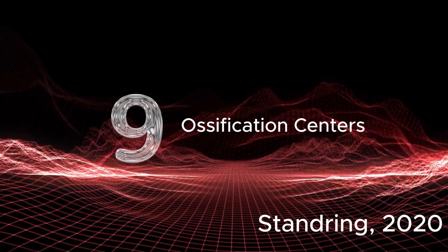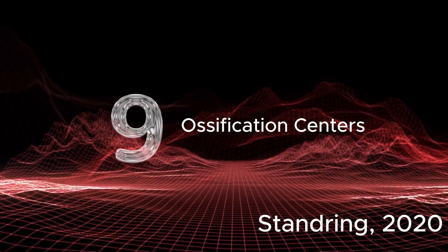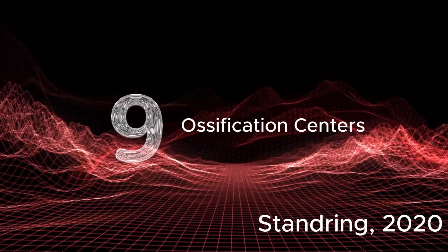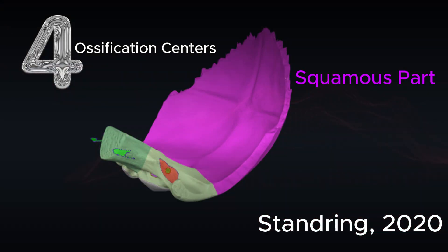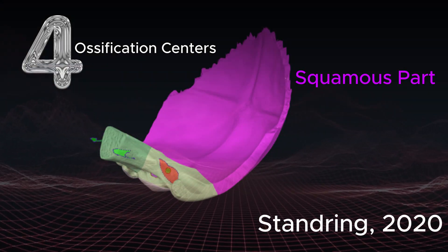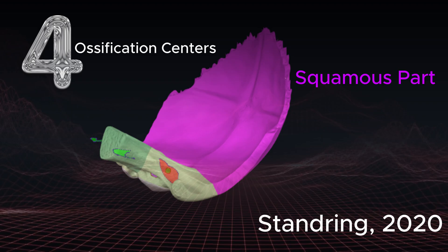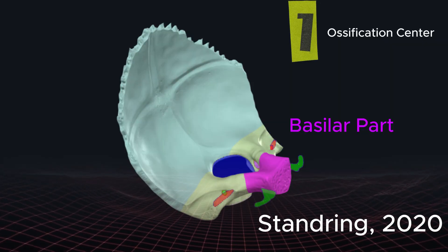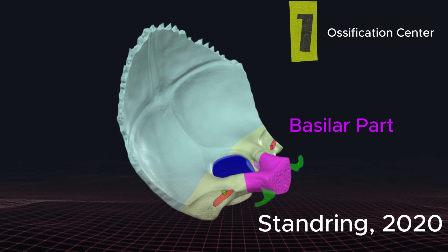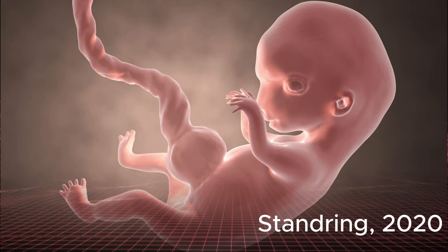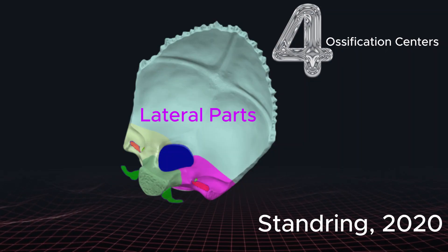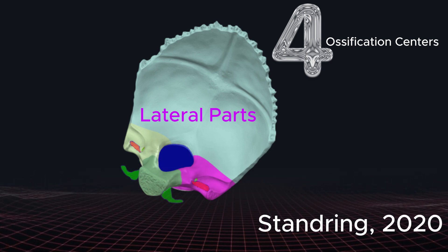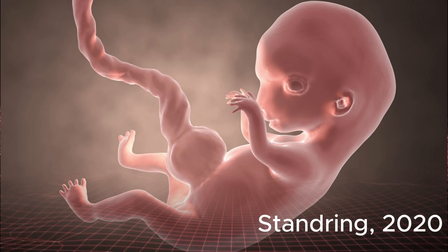Ossification of the occipital bone occurs at nine ossification centers. The squamous part has four centers, which appear in utero during the second month. The basilar part has one center, also appearing in utero during the second month. The right and left lateral parts each have two centers, also appearing in utero during the second month.